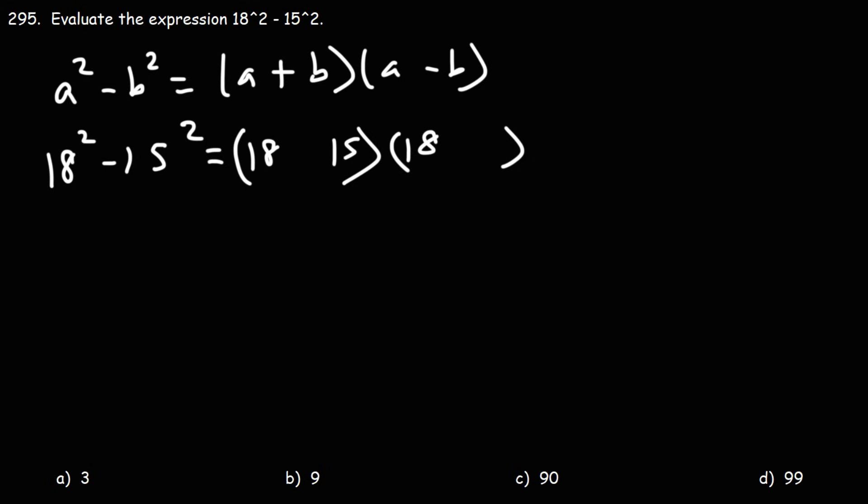Now what's 18 + 15? 8 plus 5 is 13, 10 and 10 is 20, so 20 and 13, this will be 33. And of course you can add it this way: 8 plus 5 is 13, carry over the 1, 1 plus 1 plus 1 is 3, so you get 33.